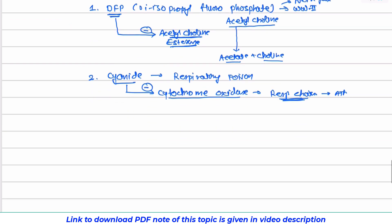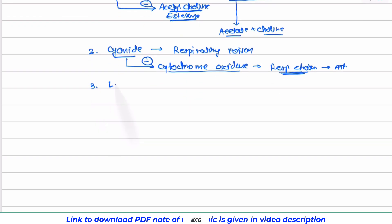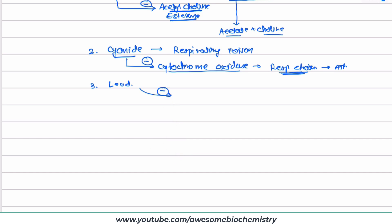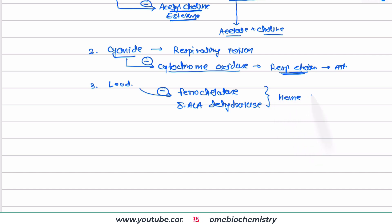The next example is the heavy metal lead. Any heavy metal at a higher concentration irreversibly inhibits many enzymes. Lead at a higher concentration irreversibly inhibits two enzymes: ferrochelatase and delta-ALA dehydratase. Both of these enzymes are required in the pathway of heme synthesis.